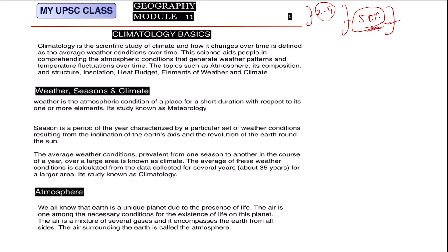Before reading world geography, you need to remember the basic landforms, latitude and longitude, and the different climatology concepts. After that, only simple things remain. But if you complete physical geography, your 50% of geography is over, and if you complete geography, then indirectly your environment preparation is also about 50% done.